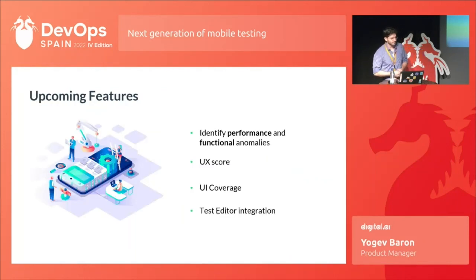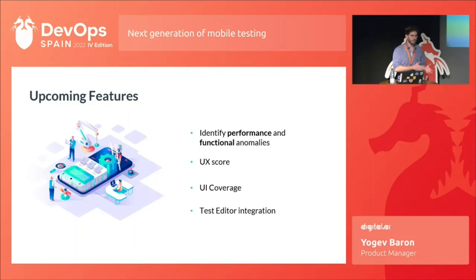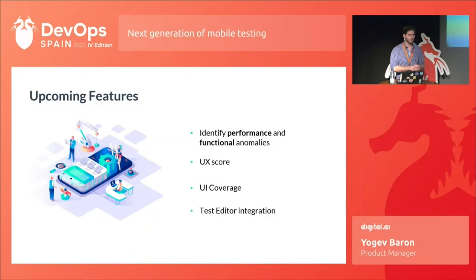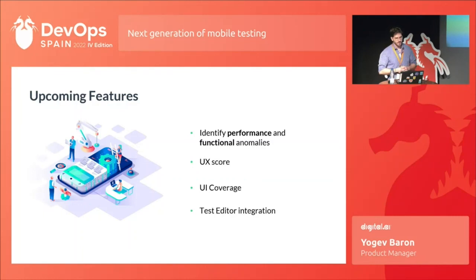What are we planning next for autonomous testing? We are planning to identify performance and functional anomalies in early stages. For example, if we upload different versions of the same application, we'll be able to see changes regarding performance — if one application version influences device vitals like CPU or memory differently compared to another version. Also for functional testing, we'll be able to see the different pages or functionalities between application versions.